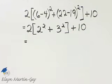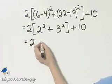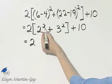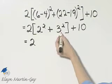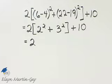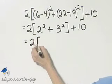Now look again. I still have to work within my set of brackets so I have two times and within that I will square 2 and square 3 and then add those two numbers. So there's my bracket.